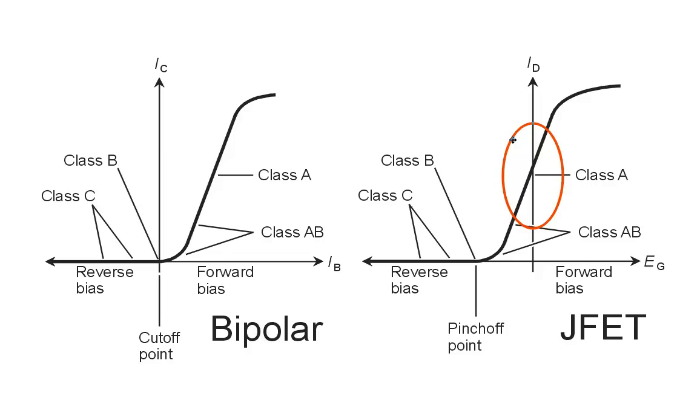However, when it comes to the modulation envelope on a radio frequency signal, we can get away with class AB operation, and we will still get a linear reproduction of the modulation envelope. Even with class B, we will get a linear reproduction of an amplitude modulation envelope in a radio frequency power amplifier.